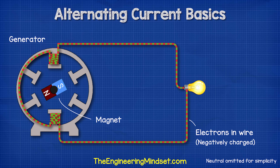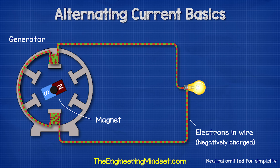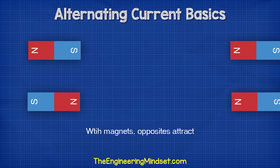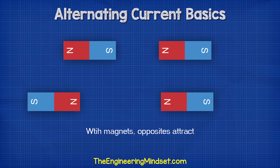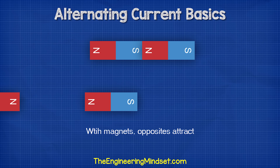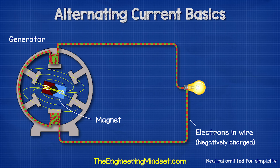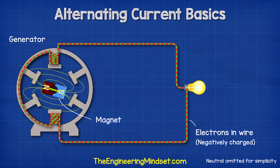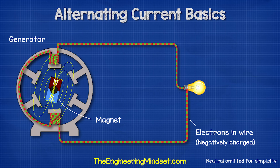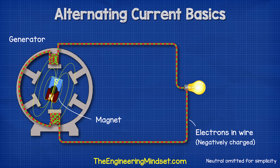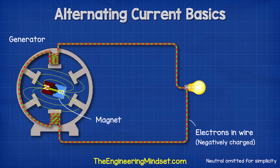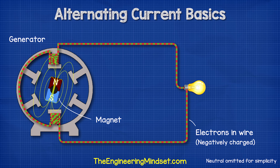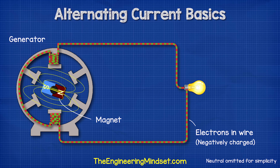The electrons in the wire are negatively charged. As you might already know, magnets push or pull depending on the polarity. So as the magnets rotate past the coils, the positive and the negative half are going to push and pull the electrons within the copper coils and also through the connected copper wires.